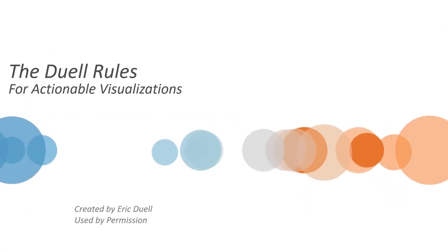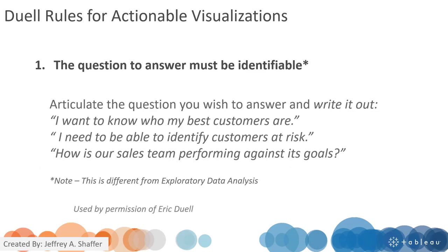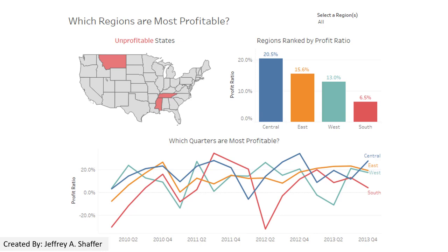Let's introduce some principles of creating actionable visualizations. Eric Duol, vice president of analytics and intelligence at the EW Scripps Company, created these rules for actionable visualizations. The first principle is that the question to answer must be identified. For example, in this visualization they start by asking: which regions are most profitable? We can easily see that the question has been answered perfectly by using this visualization.